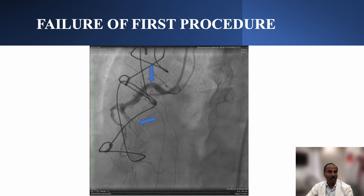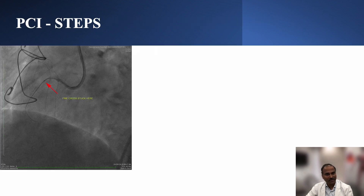The first procedure failed mainly because they couldn't cross the lesion, and they were not able to bring the microcatheter beyond a certain point — there was one obstruction here and another occlusion which didn't allow the PCI wire to go in. For our attempt, an Amplatz guide was taken for good backup support. Fine Cross was used with a Fielder XTR wire, but Fine Cross was stuck at the proximal lesion and could not be advanced beyond it.